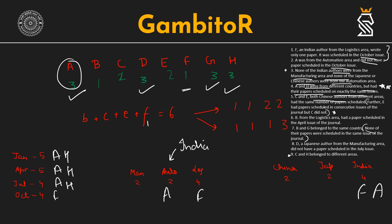C and E are both Chinese authors working in different areas with the same number of papers scheduled, so both have either one or two papers each. It is given that E had papers scheduled in consecutive issues but C did not, therefore both must have two papers each. E has consecutive issues and C does not, giving us C=2 and E=2. The remaining author B comes out to one paper.